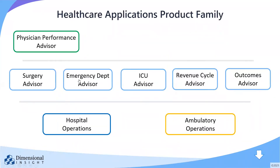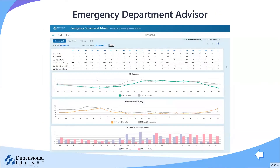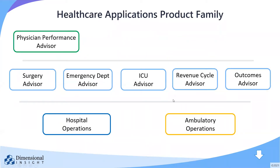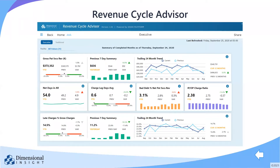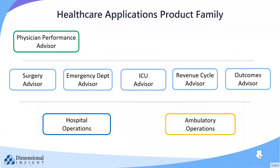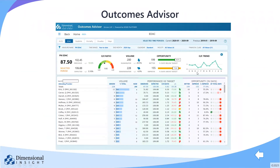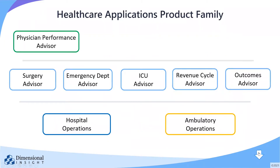In the middle layer, we have a service line specific application, such as the emergency department, which adds information to the hospital operations data set for things specific to emergency department encounters like boarding time and turnaround time, to help identify bottlenecks and opportunities to improve throughput and performance. Then there's Revenue Cycle Advisor, which is specific to the Revenue Cycle business function, providing measures around things like denials and receivables to increase the efficiency of the revenue cycle. And finally, Outcomes Advisor uses CMS-specified measures and provides the ability to compare your performance on those measures to those of a peer cohort that you select.